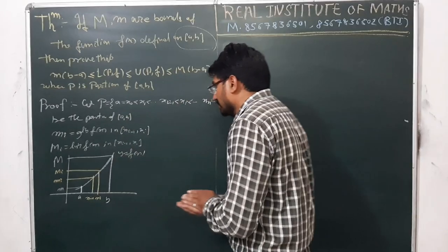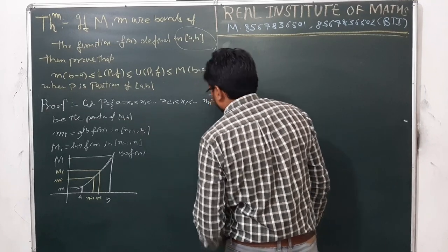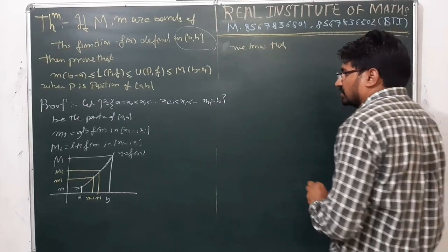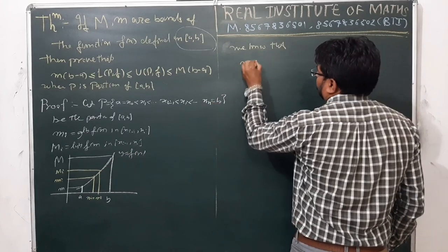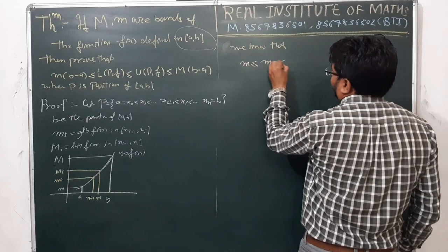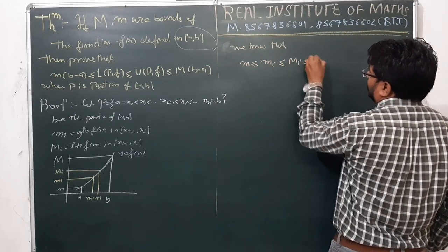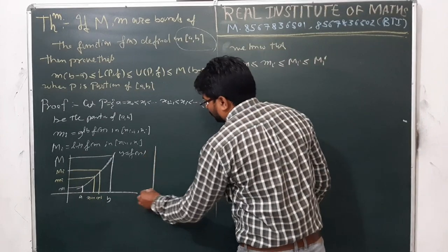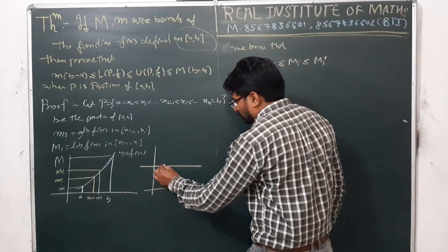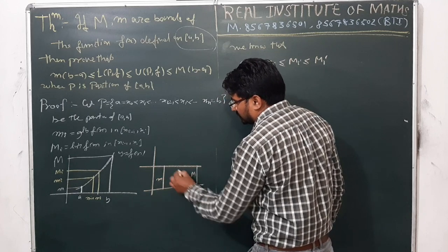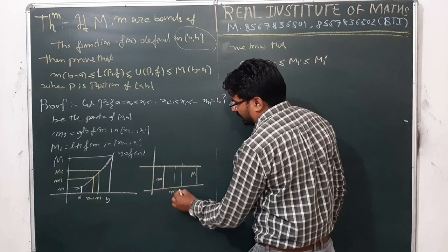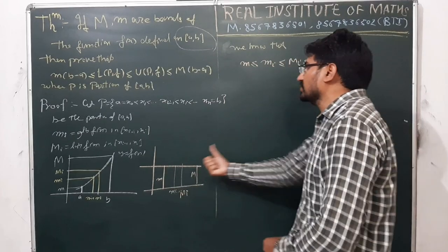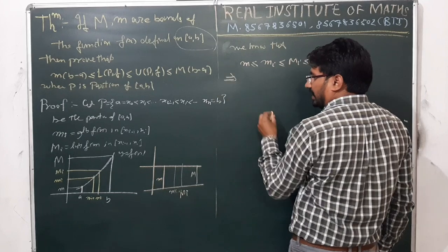One thing is confirmed: we know that small m ≤ mᵢ ≤ Mᵢ ≤ M. Equality holds when the function is constant, in which case small m, capital M, mᵢ, and Mᵢ are all the same.